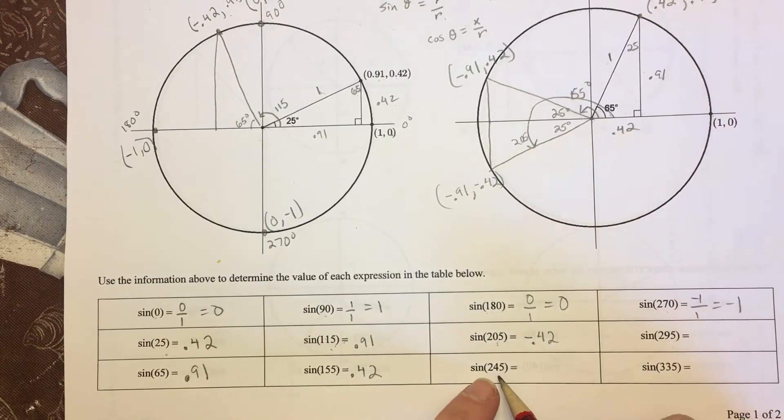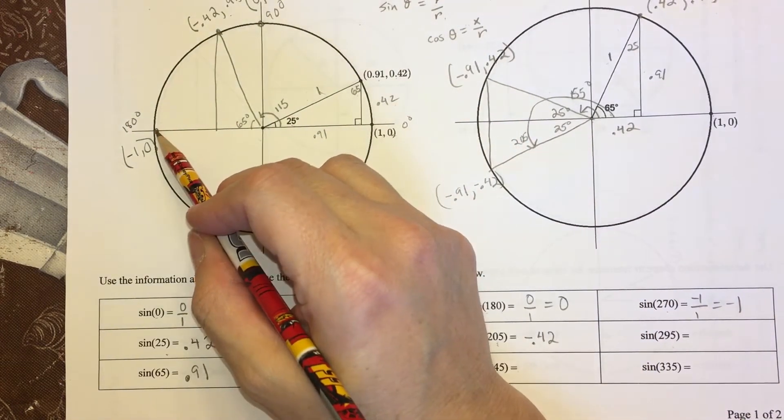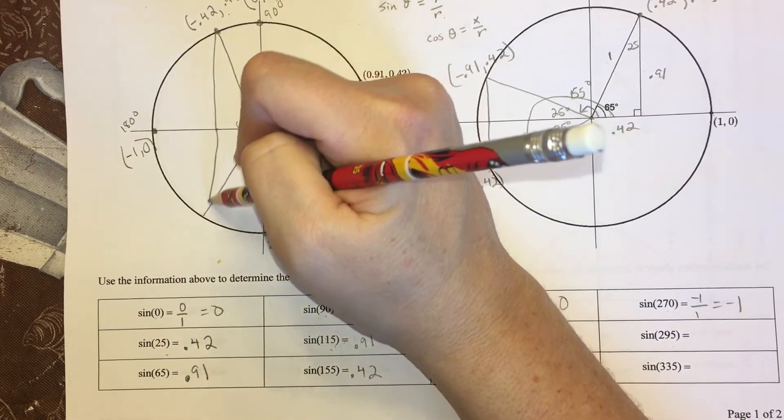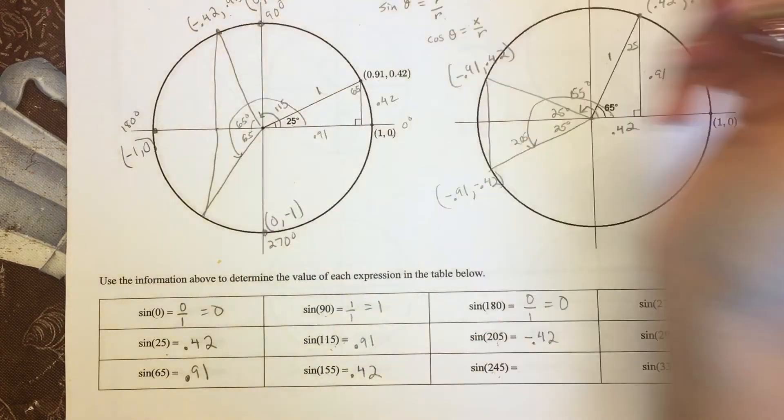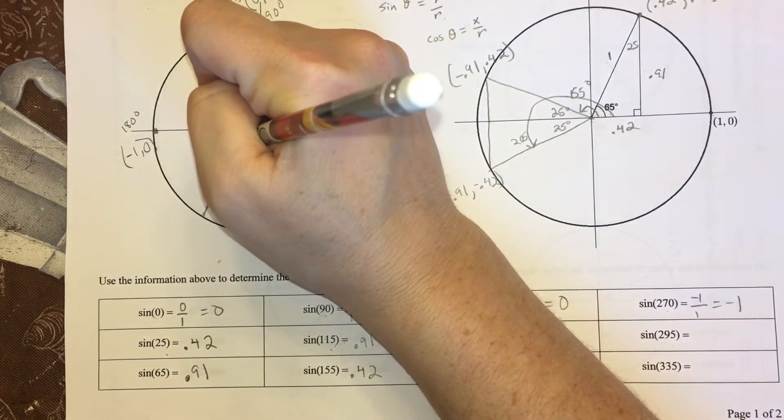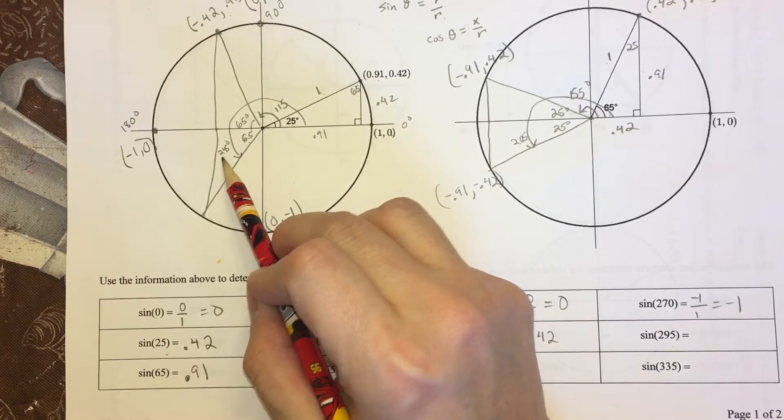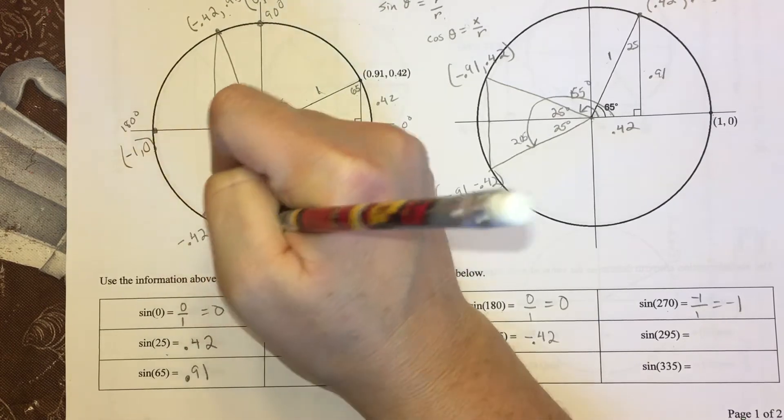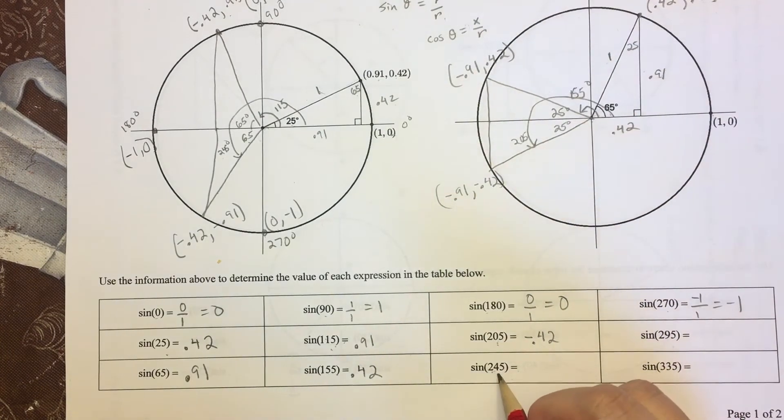So we have three left. We have one more in the third quadrant, and I bet you this has a reference angle of 65. So if I think about 245—245 is 180 plus 65. That would make 245. So 245 has a reference angle of 65 because if I subtract 180 from 245, I would get 65. And again, I use the symmetry. Okay, so now y over r.